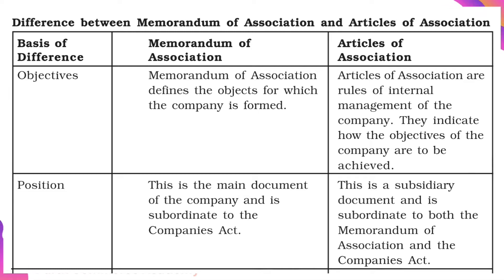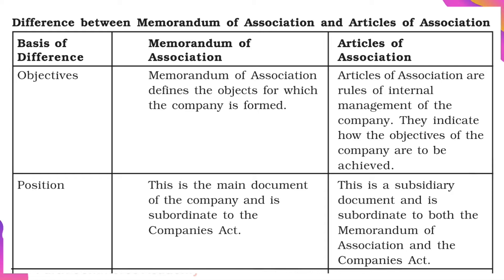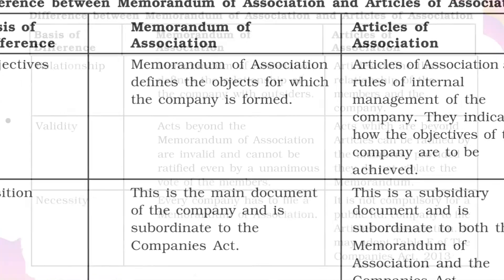From the position point of view, the Memorandum of Association is the main document of the Company and is subordinate to the Companies Act. In the case of Articles of Association, it is a subsidiary document and is subordinate to both the Memorandum of Association and the Companies Act.